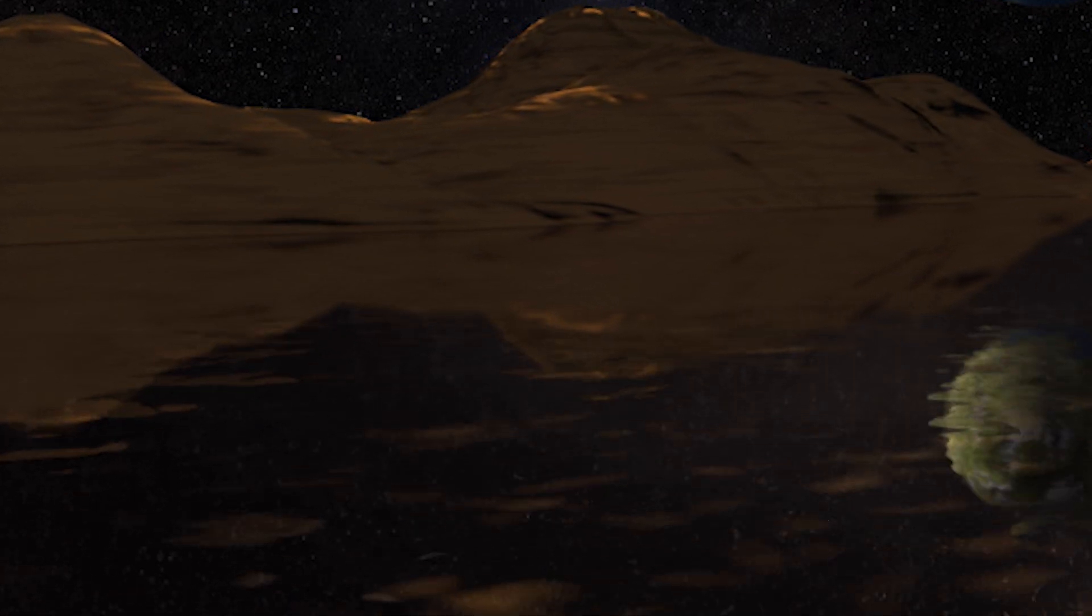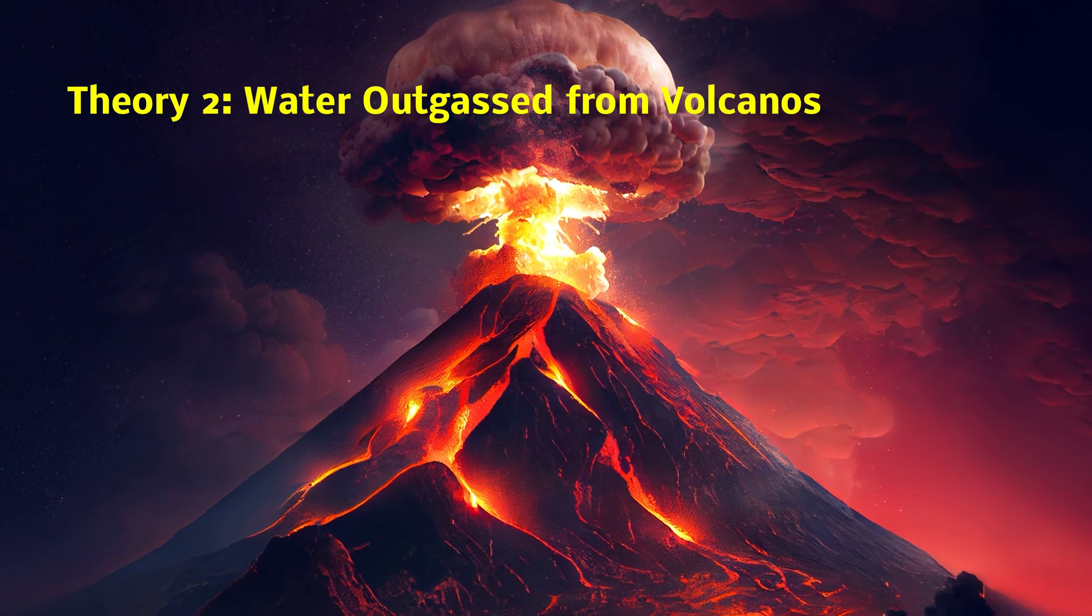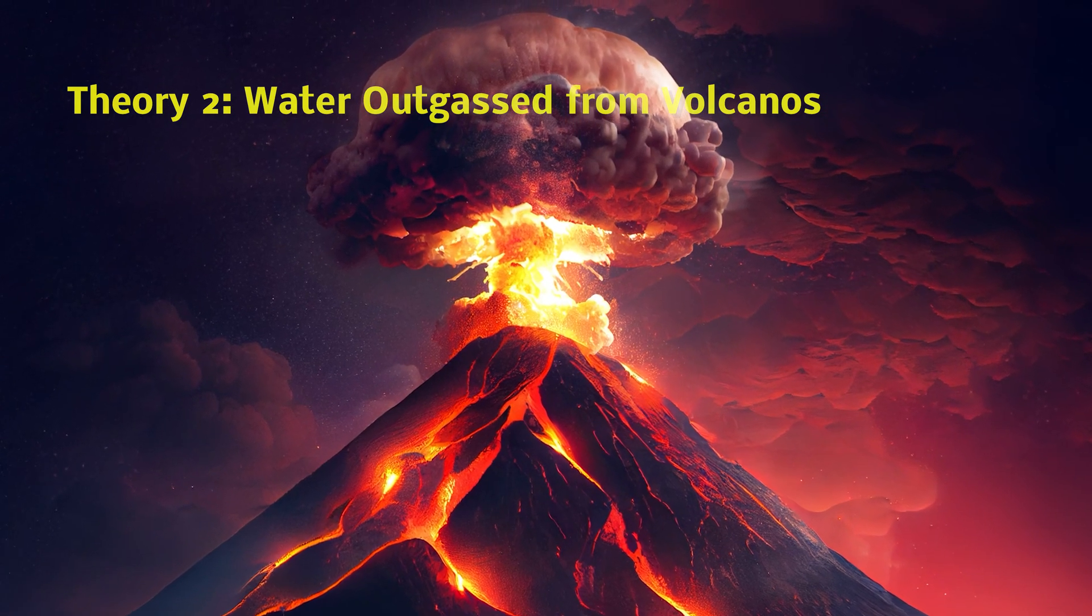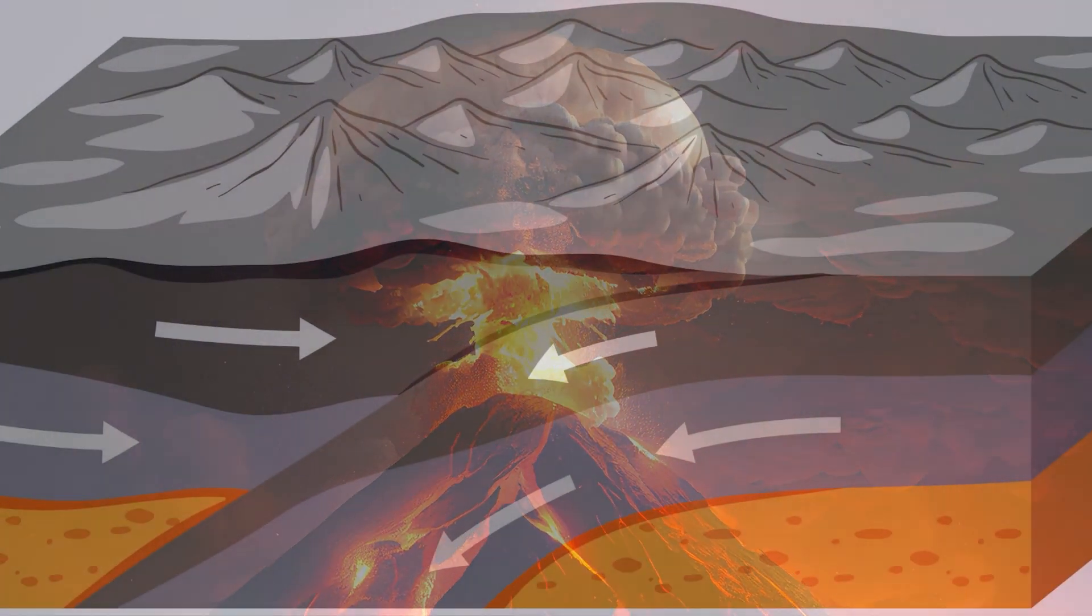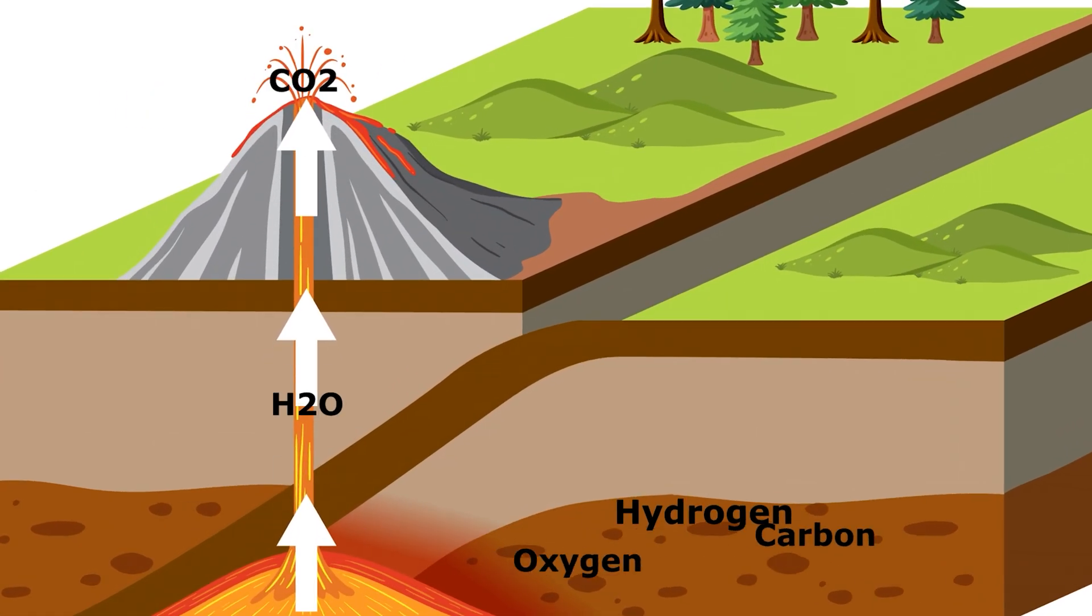A second similar theory is that Earth's water comes from within the Earth itself, a process known as outgassing. Volcanic activity would have released water vapor into the atmosphere, condensing and falling as rain to fill the oceans.